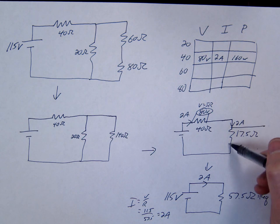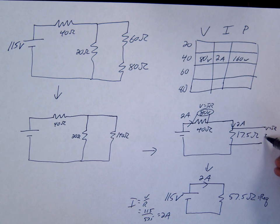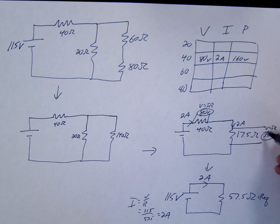We are missing the voltage over here. We're going to use V equals IR. We're going to go 2 times 17.5, and we're going to get 35. So that's 35 volts across 17.5.